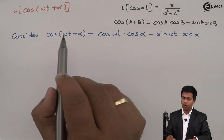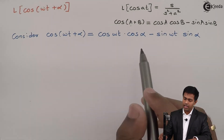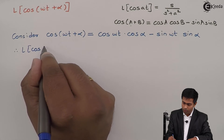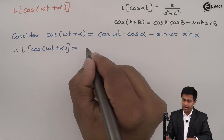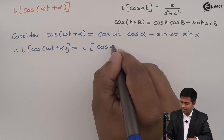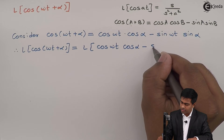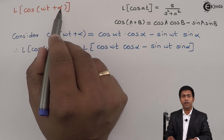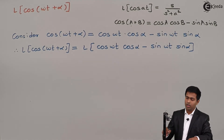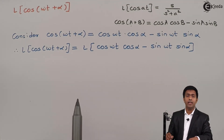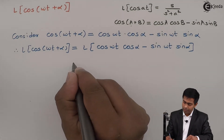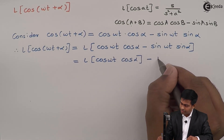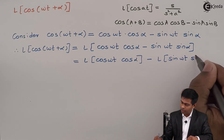Now I got the expansion of cos(ωt + α), so I will substitute this value in the question. Therefore, the Laplace transform of cos(ωt + α) is the Laplace transform of [cos(ωt)·cosα − sin(ωt)·sinα]. I will separate the two terms and apply the Laplace transform separately, giving us L{cos(ωt)·cosα} minus L{sin(ωt)·sinα}.